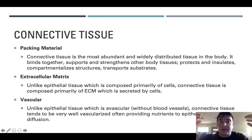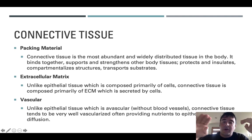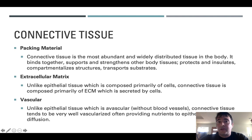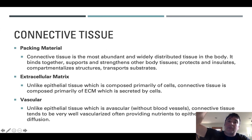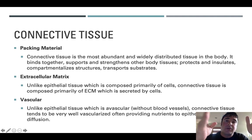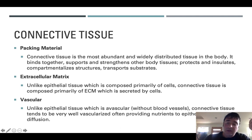Most connective tissues, with the exception of cartilage and dense regular connective tissue, tend to be vascular, meaning they have blood vessels running through them that provide nutrients to different tissues. Notably, epithelial tissues are avascular, so they rely on the underlying connective tissue to get nutrients and get rid of wastes. So connective tissue, unlike epithelial tissue, tends to be highly vascular. If I'm asking a compare-and-contrast question between epithelial and connective tissue, connective tissue is structured quite differently.